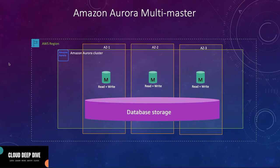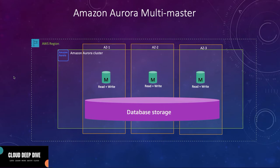In Aurora Multi-Master, the endpoints are a little different from other Amazon Aurora clusters. In a standard Aurora cluster, you get one writer endpoint and one reader endpoint. But in Aurora Multi-Master, you get individual endpoints for each DB instance, so your application needs to control the logic of which write request to send to which DB instance, since each instance can perform both read and write queries.